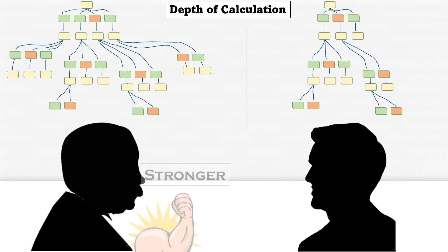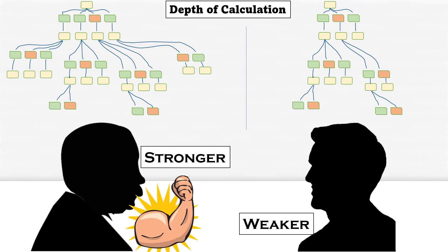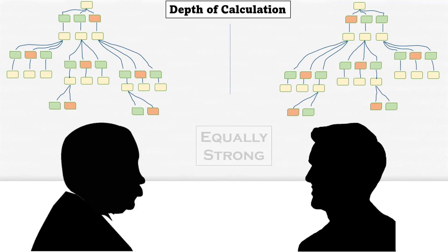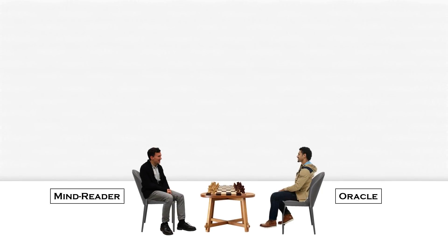The depth of calculation would decide who is stronger between the two players or if they are equally strong. Coming back to the actual problem where we have two supernatural players, let's analyze their supernatural abilities combined with their chess skills.